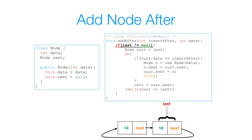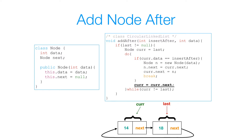I use a do-while loop because in the case of one node, that node's next references itself — this lets me first inspect the node and then increment cur to its next. If cur is still equal to itself, I know I've traversed the entire list. The first thing I check is whether cur's data equals the data I want to insert after. In this case cur's data is 18, but I want to insert after 14, so it doesn't match — I set cur equal to cur.next.